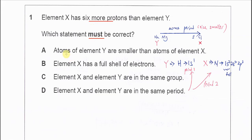A. Atoms of element Y are smaller than atoms of element X. Let's use sodium and chlorine as an example. If element Y is sodium, so element X now is chlorine.